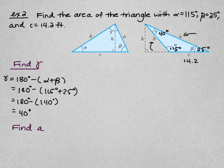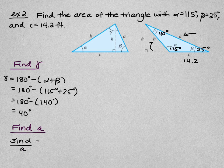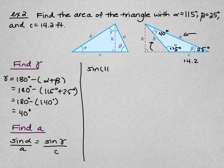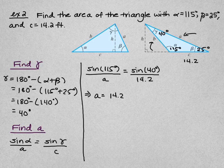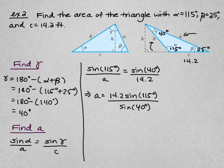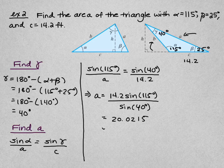Now we use the Law of Sines to find a. The Law of Sines gives sine of alpha over a equals sine of gamma over c. Substituting: sine of 115° over a equals sine of 40° over 14.2. Solving for a: a equals 14.2 times sine of 115° divided by sine of 40°, which gives approximately 20.0.